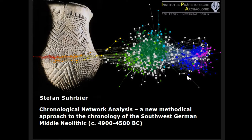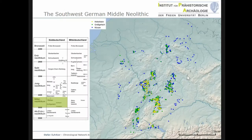Hello everyone. In the following 15 minutes I would like to present some encyclopedic aspects of my PhD thesis with a focus on network analysis. In my thesis I studied Central European Middle Neolithic assemblages, or more precisely, assemblages of the so-called cultural complex Hinkelstein-Großgartach-Rössen, which dates approximately to the first half of the fifth millennium BCE. In my PhD thesis I summarized this term as Southwest German Middle Neolithic.